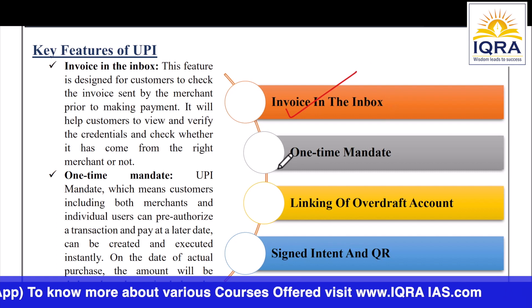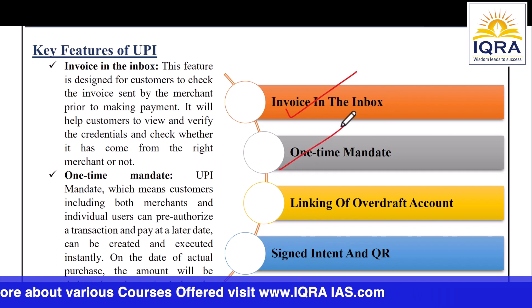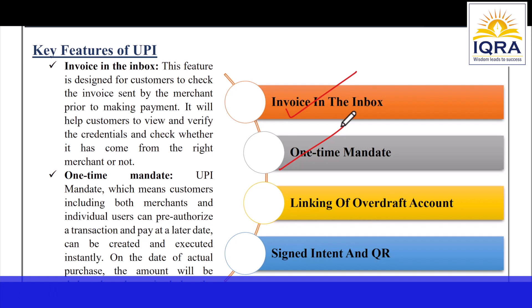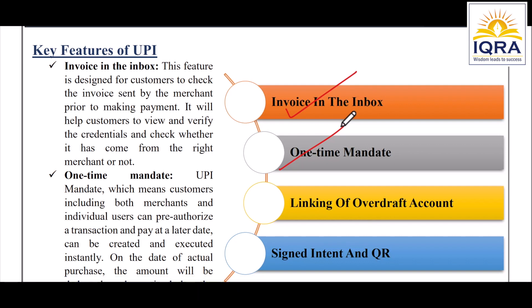The second feature is One-Time Mandate — both customer and merchant can pre-authorize or choose to pay at a later date. The amount will be deducted and received by the merchant or individual user on the date of actual purchase. Third is Linking of Overdraft Account Facility — in addition to current and savings accounts, customers can also link their overdraft account to UPI.